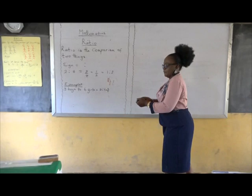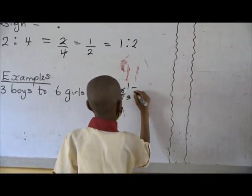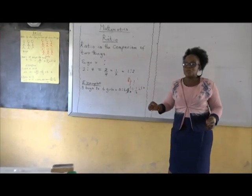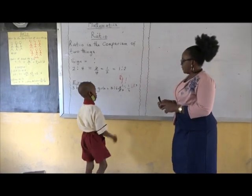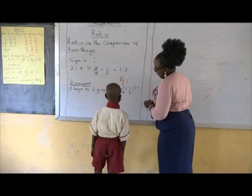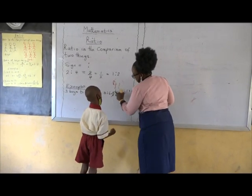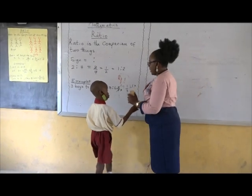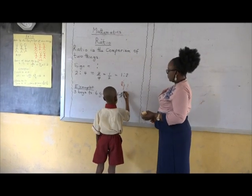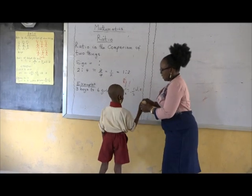Balade, come and do that. Balade, tell the whole class how you get one over three. You used two to divide it, but two in three doesn't divide evenly. Which means we are going to use three to divide it. Correct yourself — use three to divide it. Write it as ratio. A round of applause for Balade.